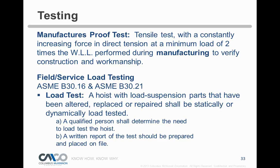Chain is specifically excluded from the load test requirement because we test the chain for you; the same applies to wire rope. However, CM recommends that if you disassemble a unit and put it back together, you do a load test to check everything out — even if you haven't replaced anything. The ASME definition only requires testing when load suspension components are replaced.